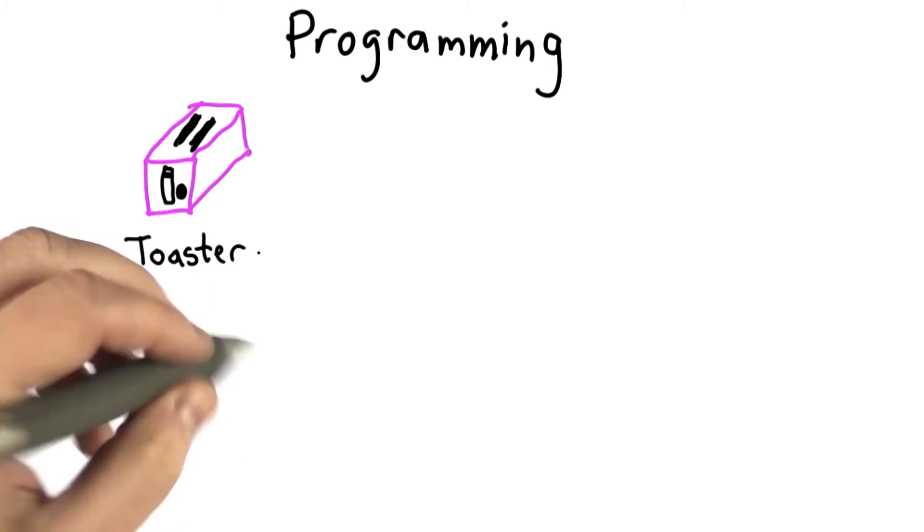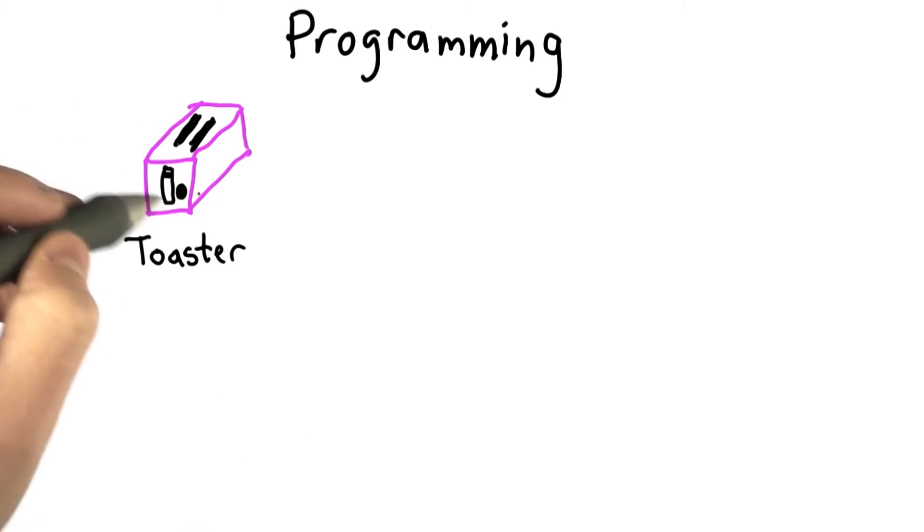A toaster can do more than one thing, maybe. We can put different things in it. We can toast bread, we can toast muffins.